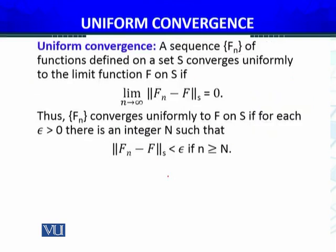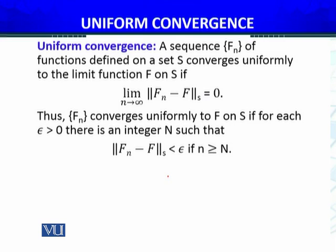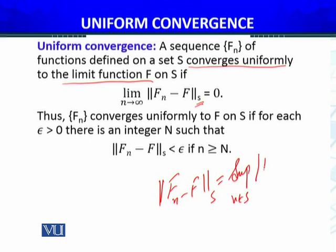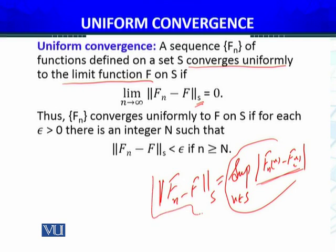We are now in a position to state uniform convergence for a sequence of functions. A sequence {F_n} of functions defined on a set S converges uniformly to the limit function F on S if lim_{n→∞} ||F_n - F||_s = 0. By definition, ||F_n - F||_s equals sup_{x∈S} |F_n(x) - F(x)|. Some books take this absolute value difference and use mathematical tools, then take the supremum. Throughout my course, I will use this norm notation.